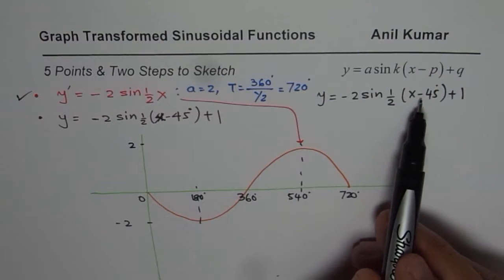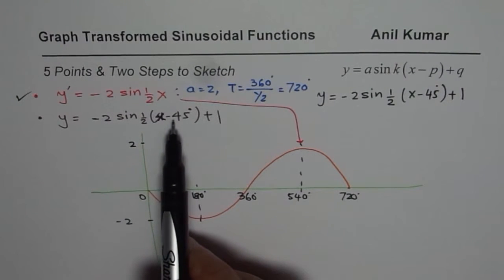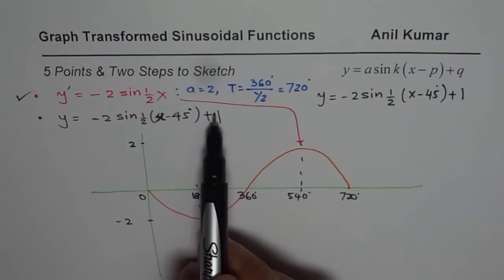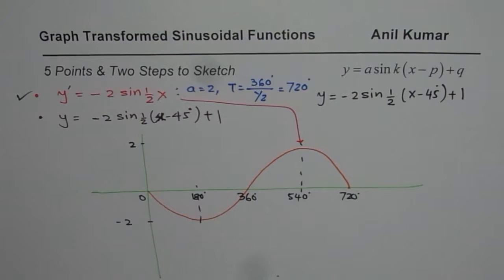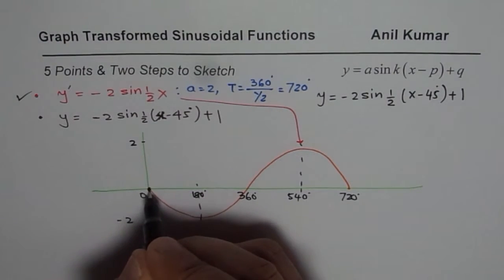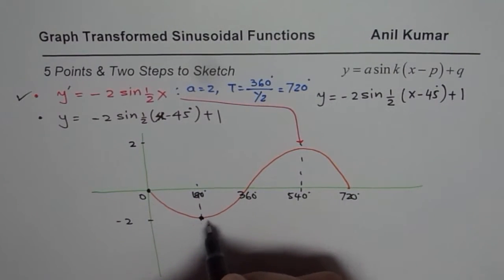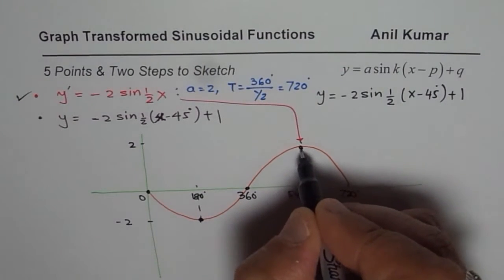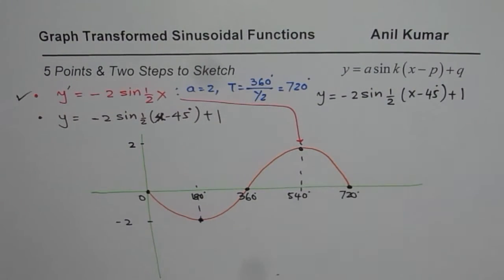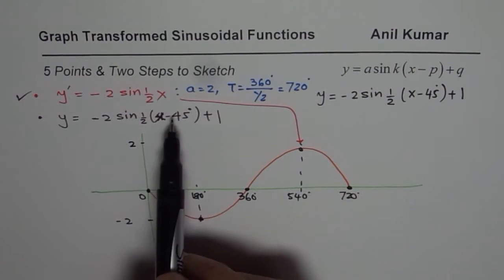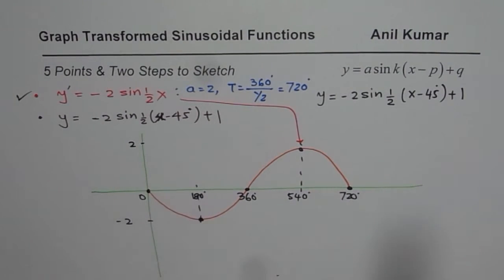Now we need to incorporate the translation. Translation is 45 degrees to right and 1 unit up. And the 5 points which we always consider will be starting point 0, minimum 0, maximum minimum points. So these are the points which we are going to consider. And we will translate them 45 degrees right and 1 unit up.